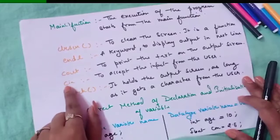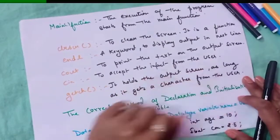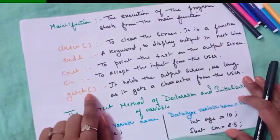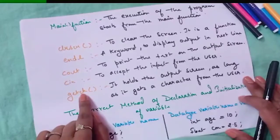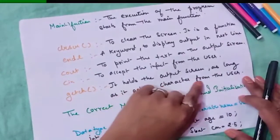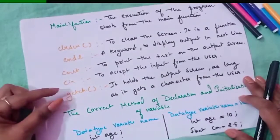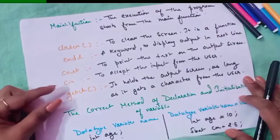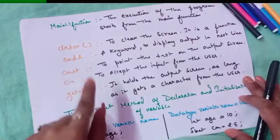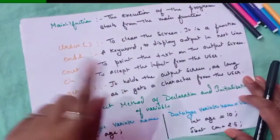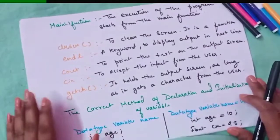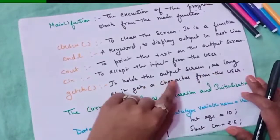What is `cin`? It also comes under the iostream header file as an input/output object. `cin` is used to accept input from the user. What is `getch()`? It comes under the conio header file. Its purpose is to hold the output screen as long as it gets a character from the user — until you press any key, the output screen is held. That is why it is called `getch` — get a character.